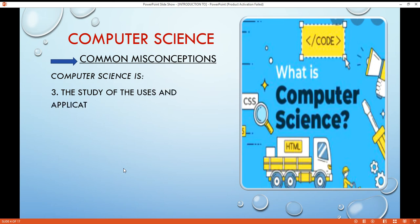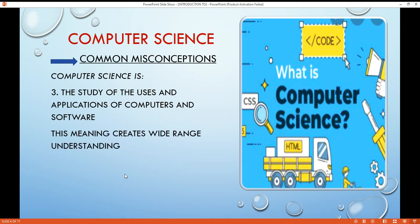The third misconception is computer science is the study of the uses and applications of computers and software. If one's introduction to computer science is not programming, then it may be a course on the application of computers and software. Such a course typically teaches the use of a number of particular packages such as word processors, search engines, database systems, imaging software, mapping packages, smartphone apps, and web browsers. This meaning creates wide range understanding because these packages are widely used by professionals in all fields. However, learning to use a software package is no more a part of computer science than drivers education is a branch of automotive engineering. The reason is that the packages are widely used by professionals in all fields.